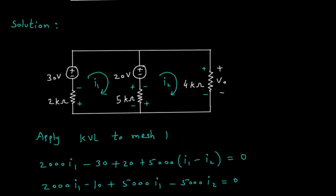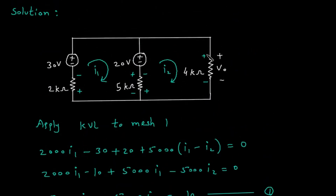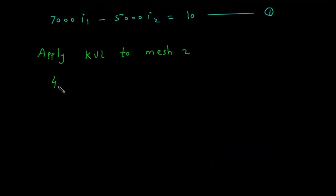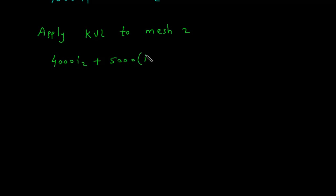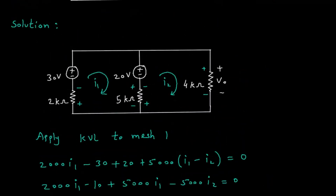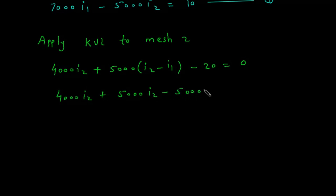Now we will apply KVL to mesh 2. Let's say we will start from here. So this will be plus 4000 × I2, then plus 5000 × (I2 minus I1), minus 20 is equal to 0. Simplifying: 4000 × I2 plus 5000 × I2 minus 5000 × I1 minus 20 equals 0, or directly equals 20.